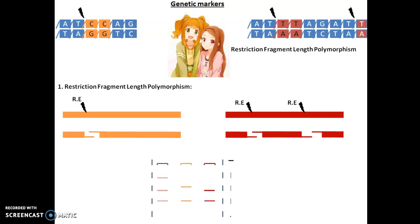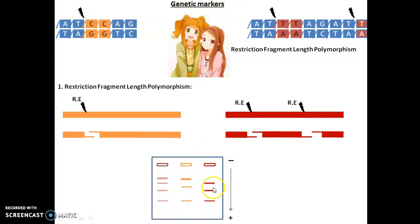When we run the gel by loading the samples along with a marker, we get this pattern. By comparing the pattern obtained after gel electrophoresis, we can find out the differences and similarities between individuals using this technique. A drawback of this technique is that we cannot repeat the process again and again, because after restriction enzyme treatment the DNA molecule does not remain the same as it was at the initial step.